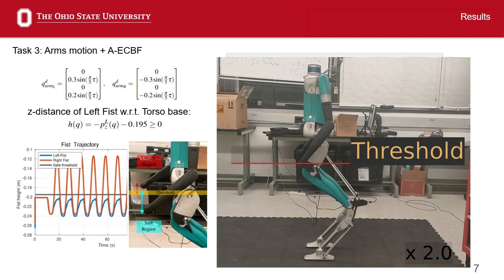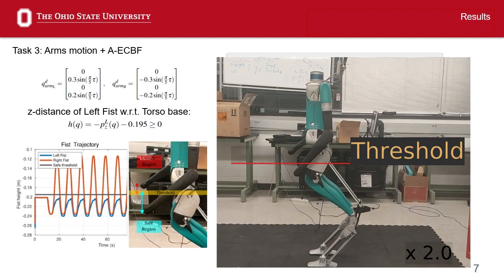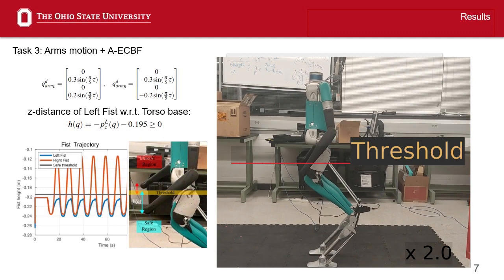Task 3 explores safety features by commanding an asymmetric reference motion while preventing the left arm from crossing a threshold.